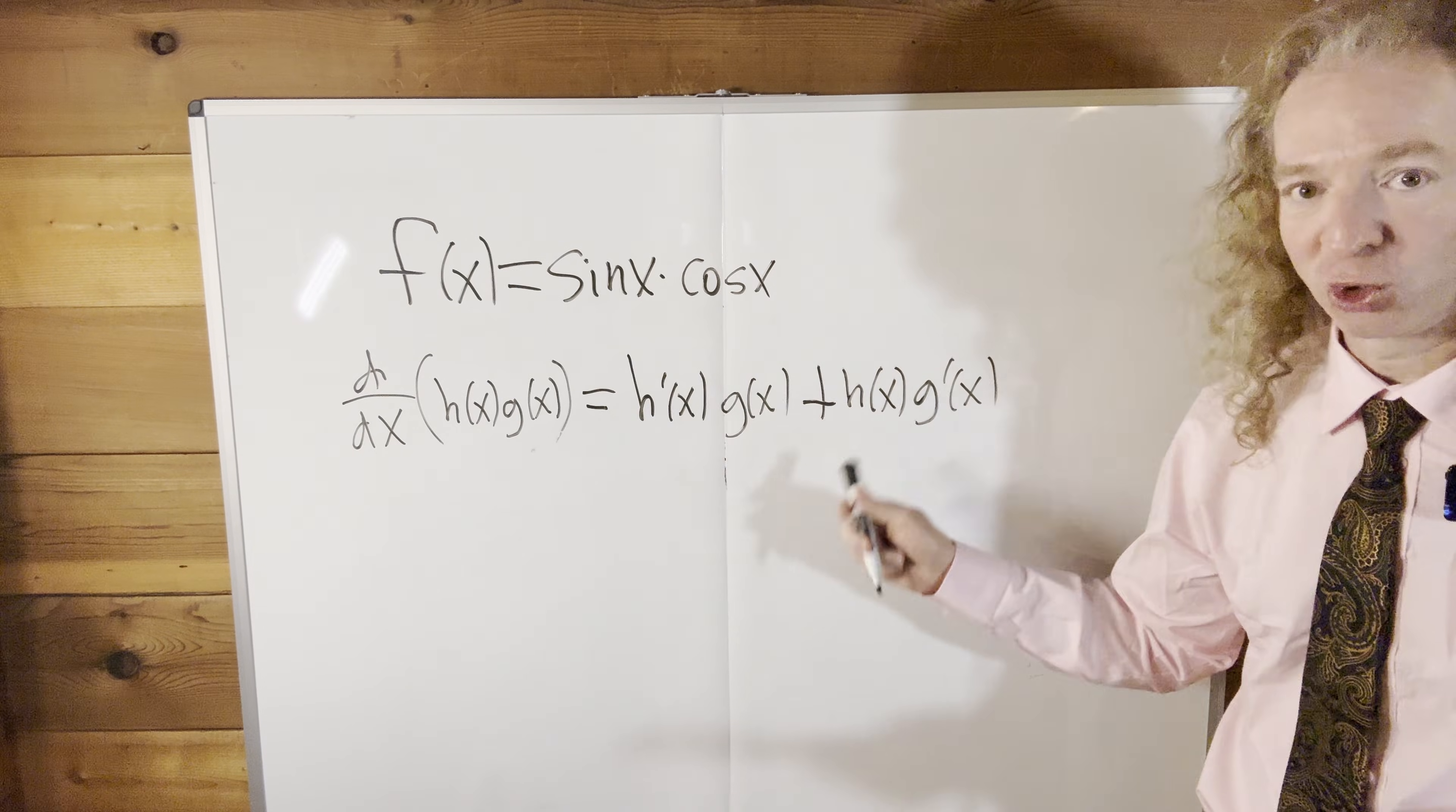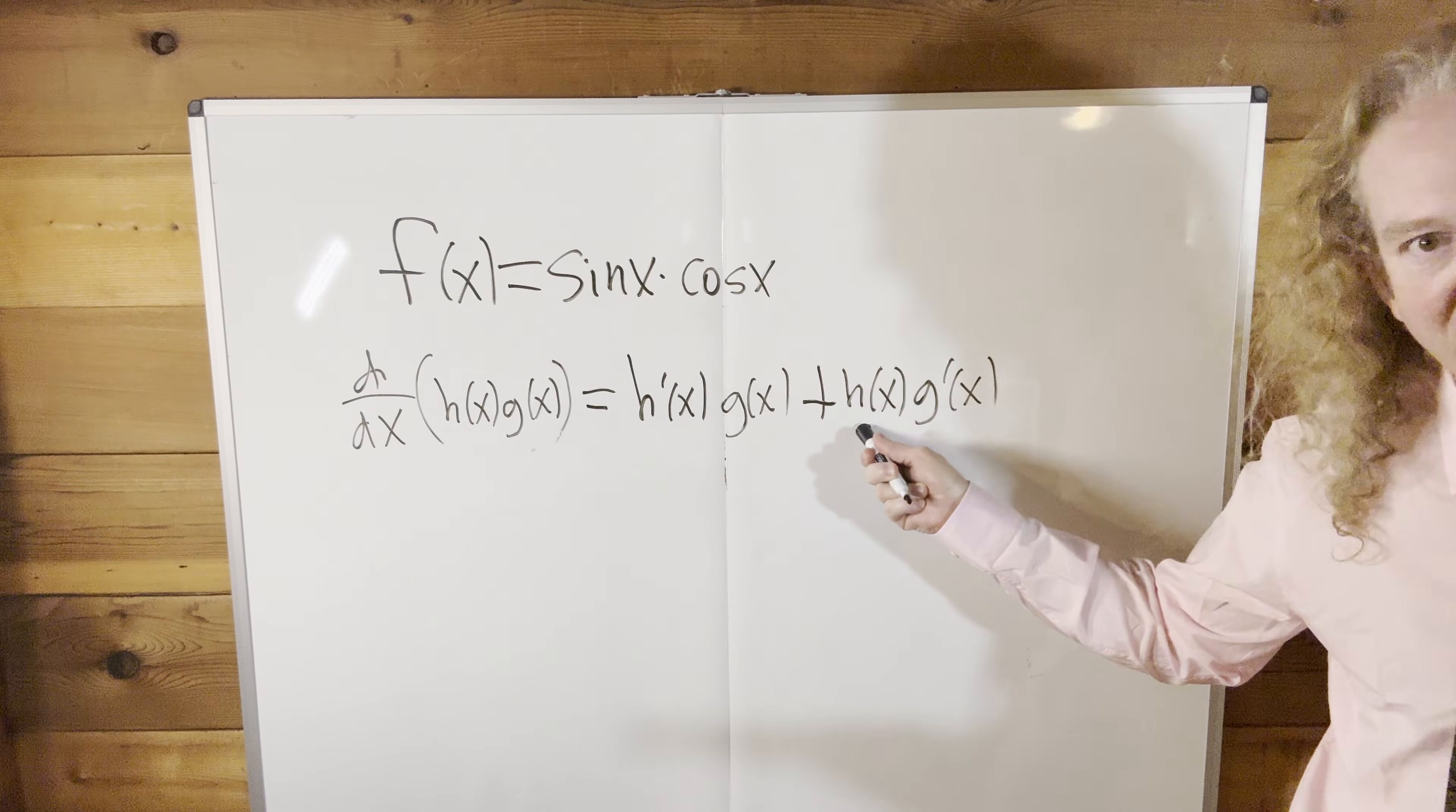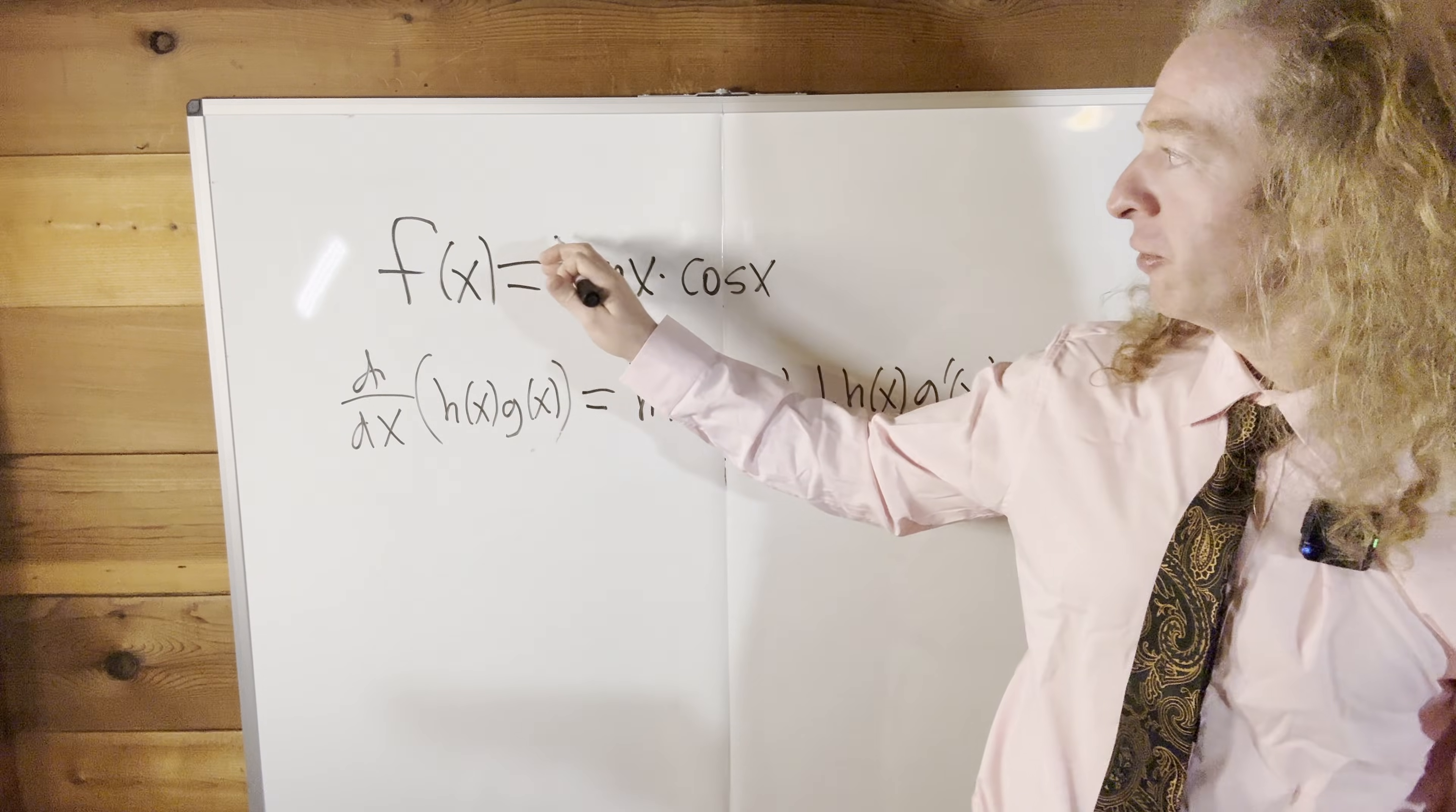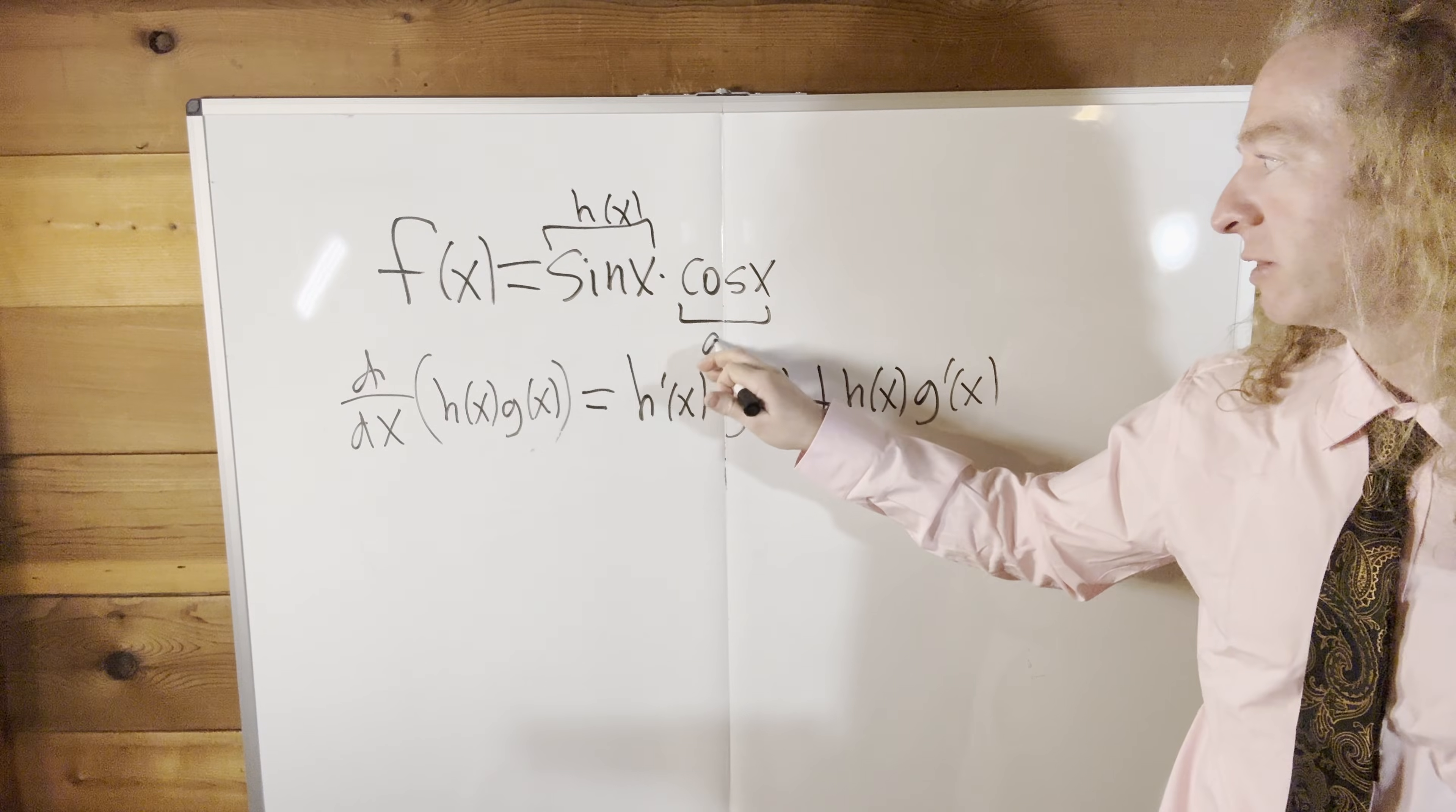Super powerful formula, super useful. Again, the derivative of the first times the second plus the first times the derivative of the second. So in our particular example, the first factor is h of x, and the second factor is g of x.